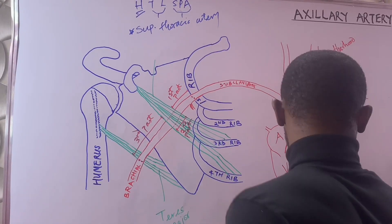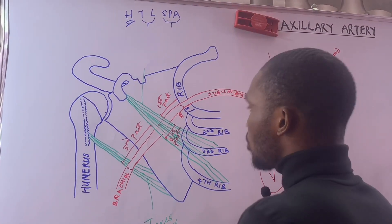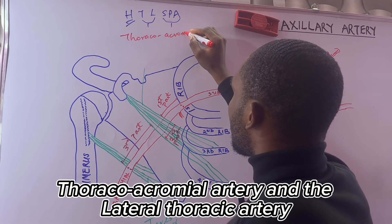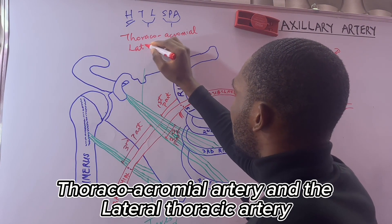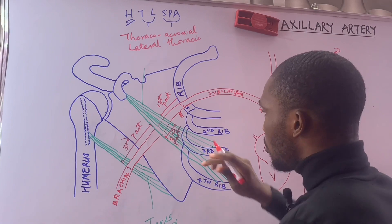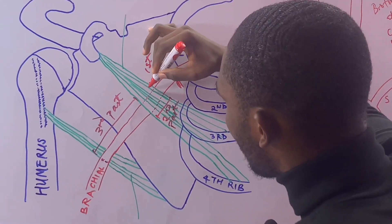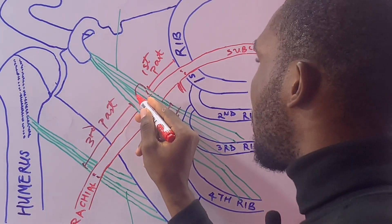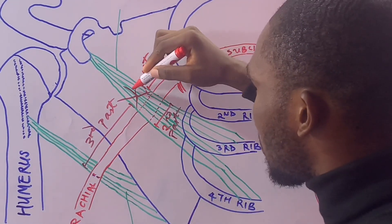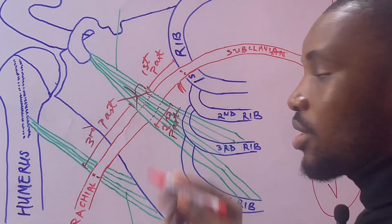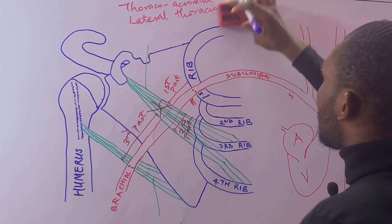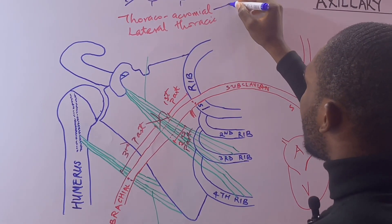For the second part, we have two branches. The first is the thoracoacromial artery. The thoracoacromial gives off four branches that run at right angles to one another.